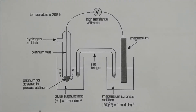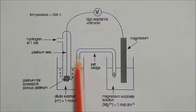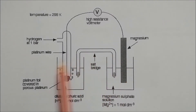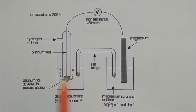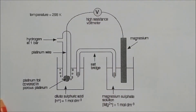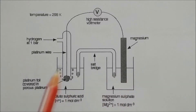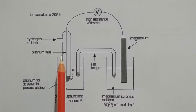Another diagram shows the platinum hydrogen electrode connected with magnesium wires and a salt bridge. In this setup, the hydrogen electrode is acting as the anode.